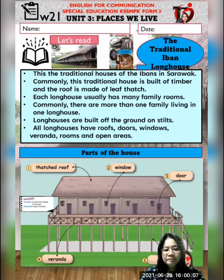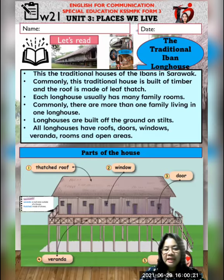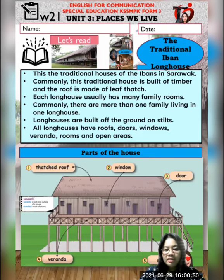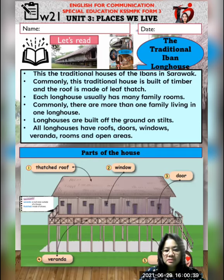Let us practice reading together. This is the traditional houses of the Ibans in Sarawak. Commonly, this traditional house is built of timber and the roof is made of leaf thatch. Each Longhouse usually has many family rooms. Commonly, there are more than one family living in one Longhouse. Longhouses are built off the ground on stilts. All longhouses have roofs, doors, windows, veranda, rooms and open areas.